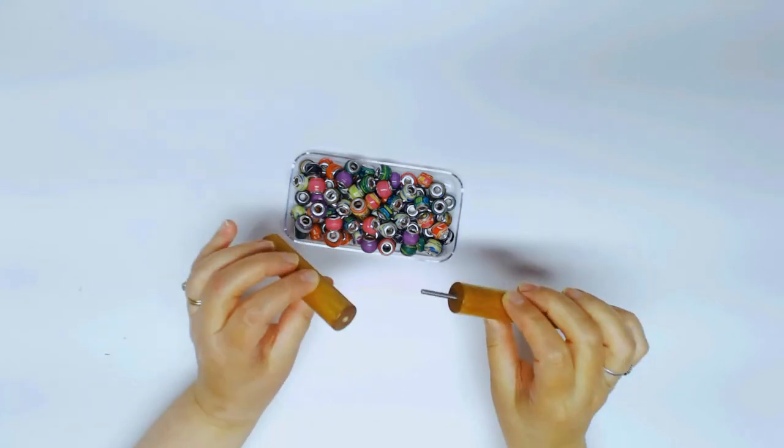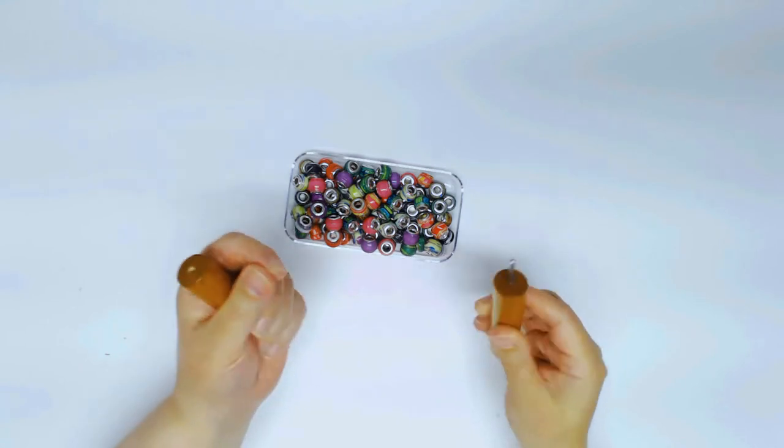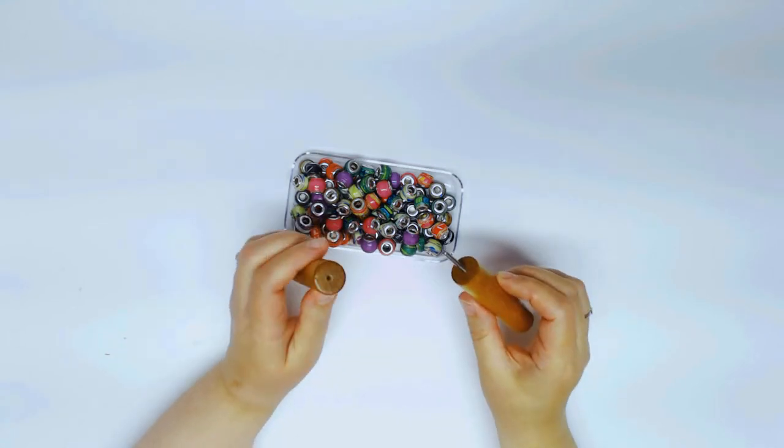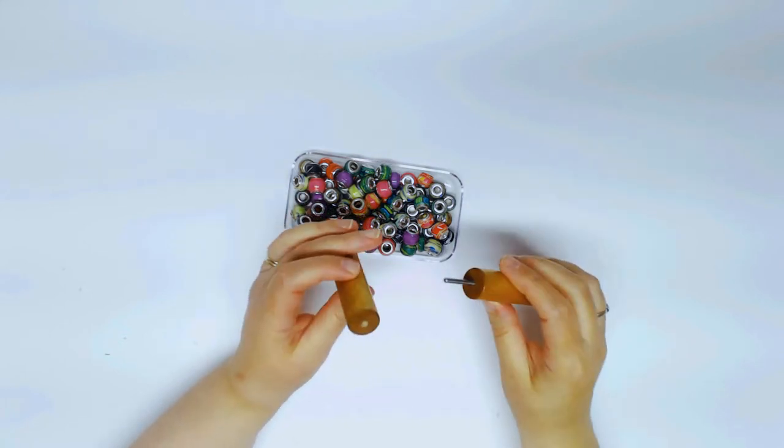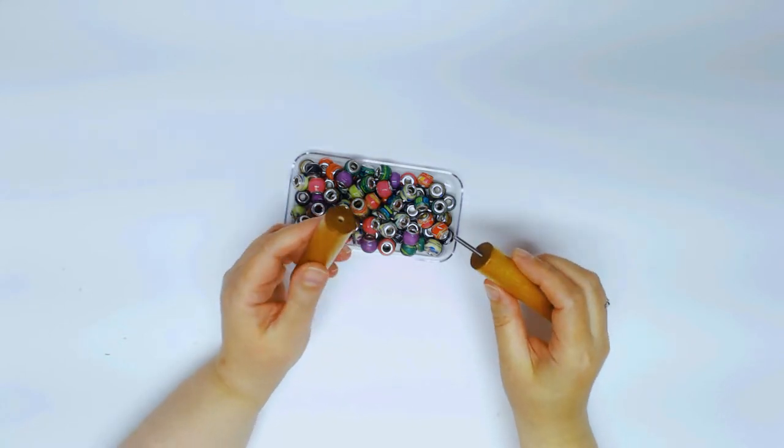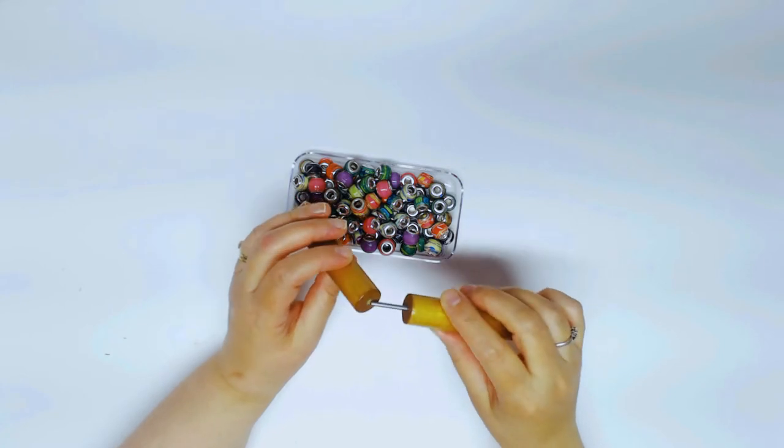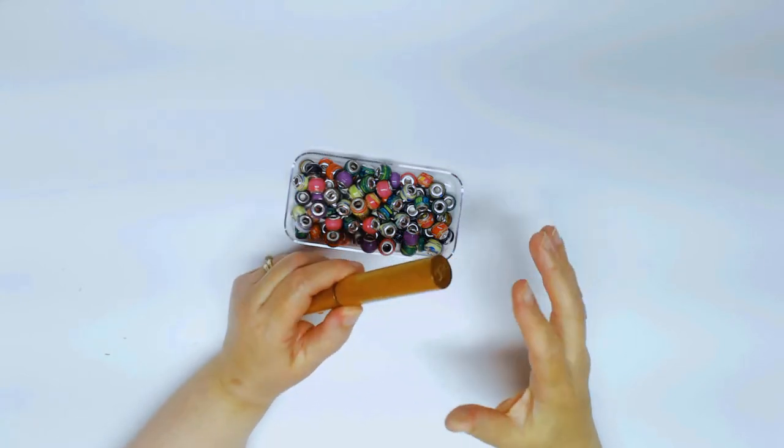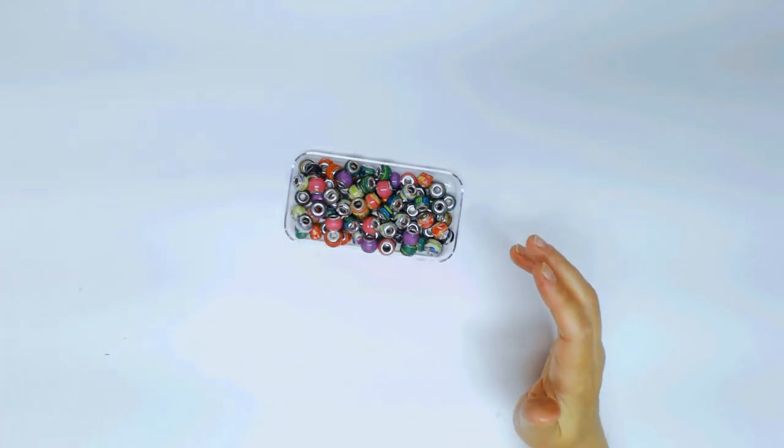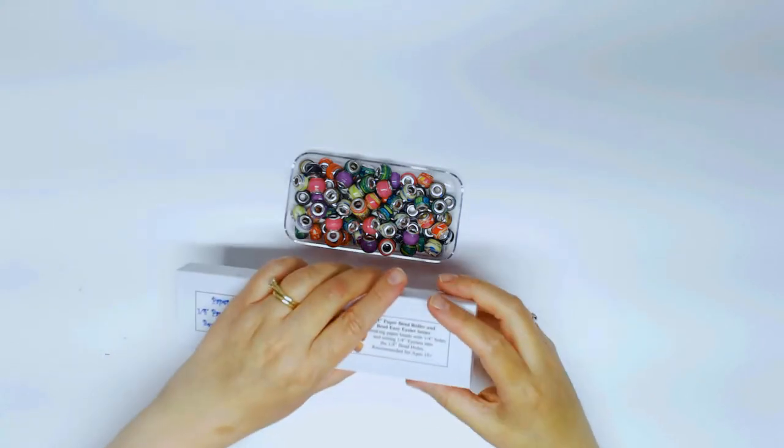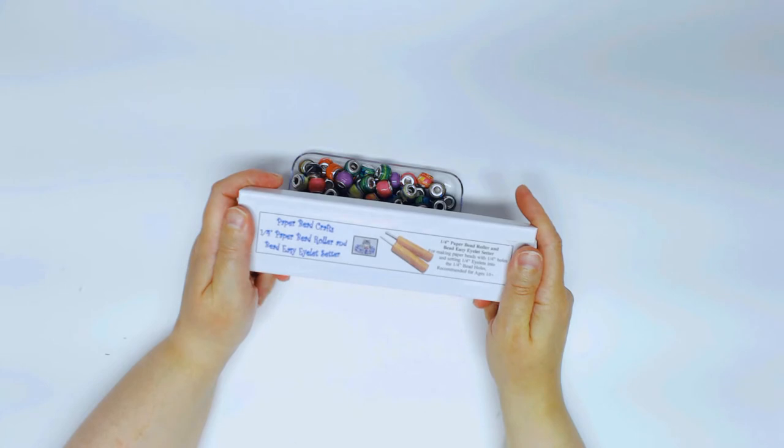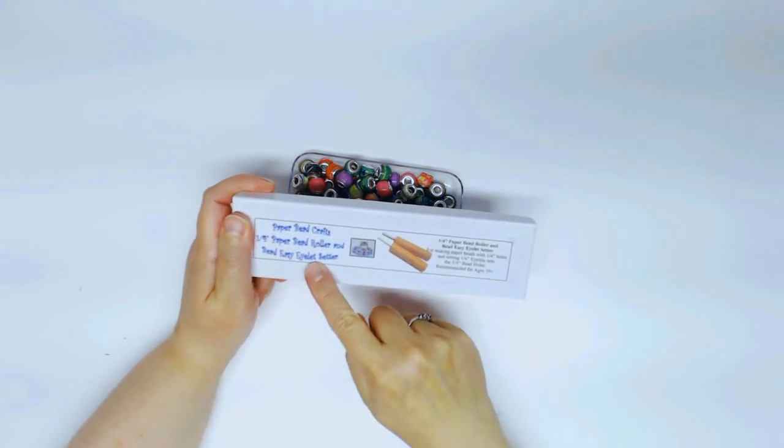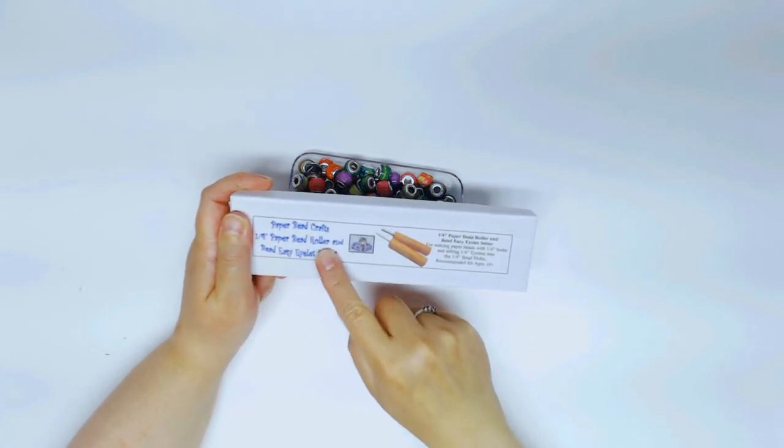It's similar to the bead easy eyelet setter with the little tiny pin that you use for the 3/16 inch paper beads with the 3/16 eyelets. But this one is for the next size up, 5 millimeters or the quarter inch holes, more like 5 millimeter holes.